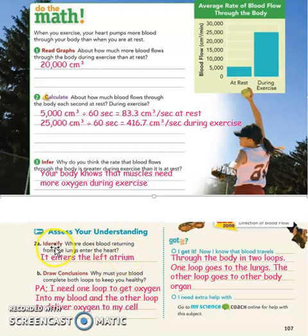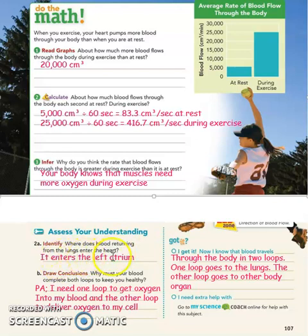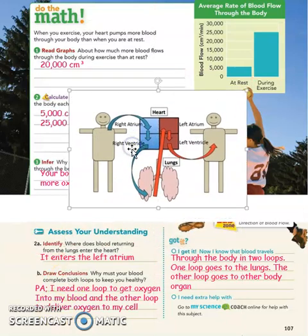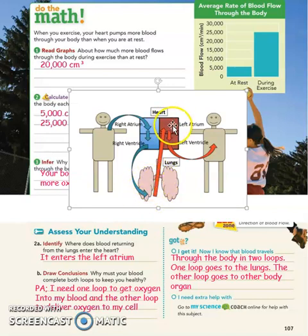Assessment 2a: where does blood return from the lungs when it enters the heart? It enters the left atrium. Blood returning from the lungs goes to the left atrium.